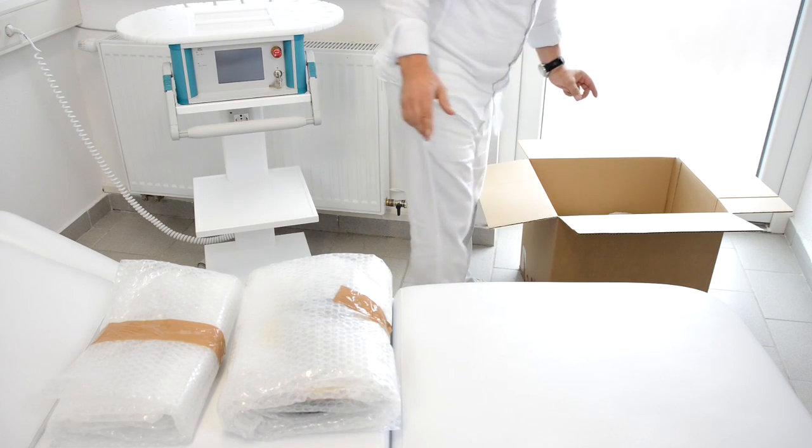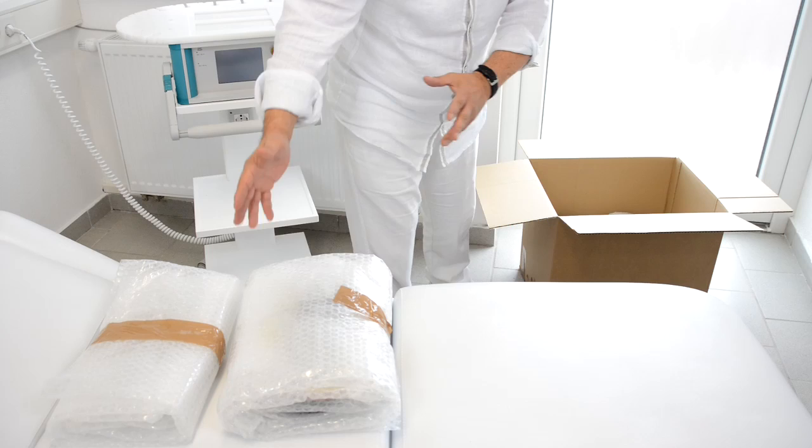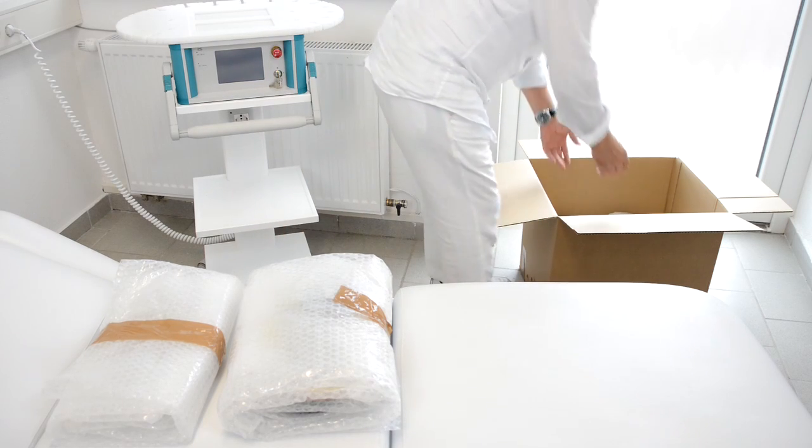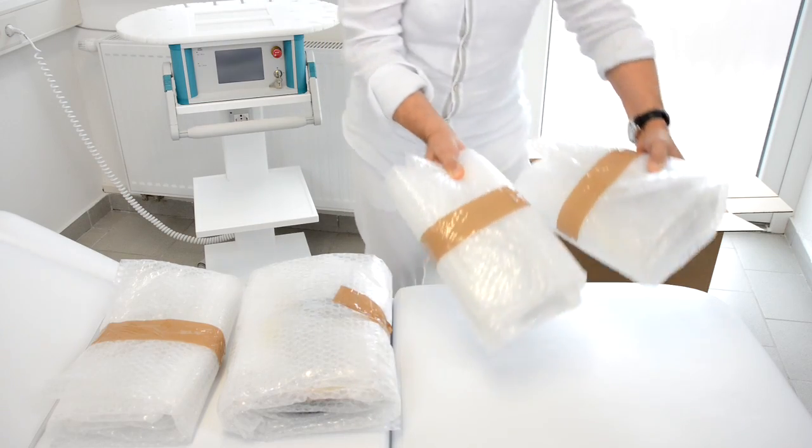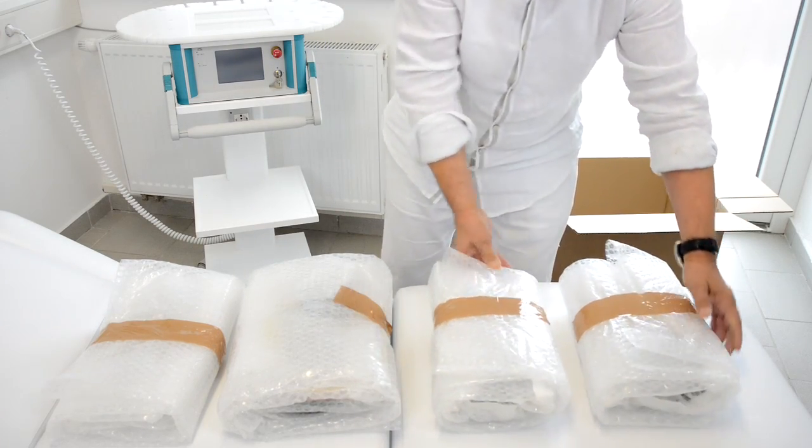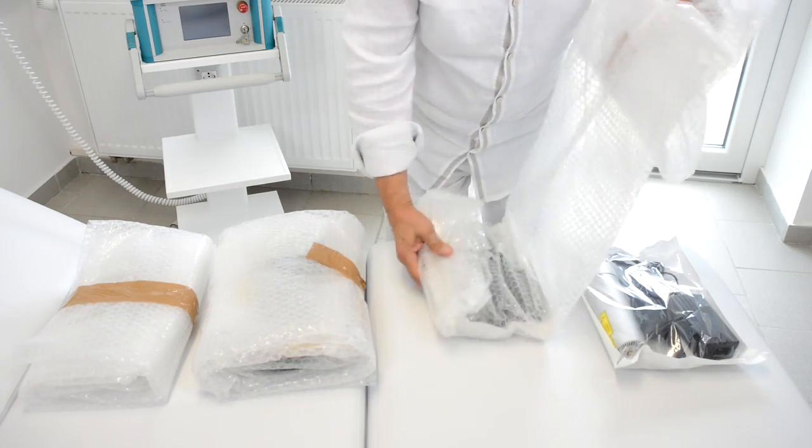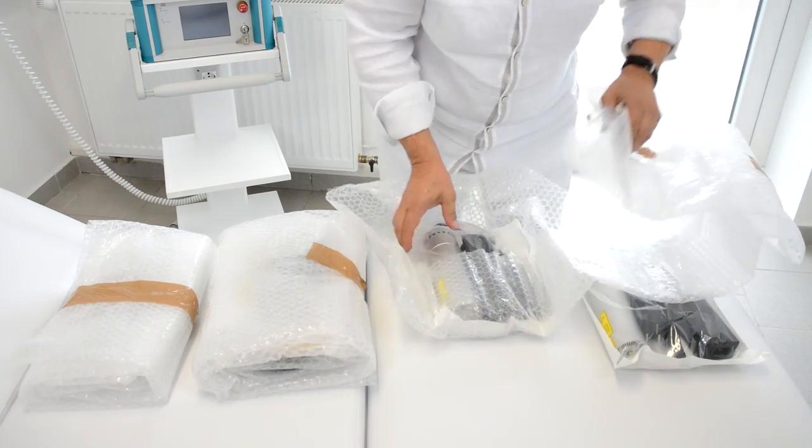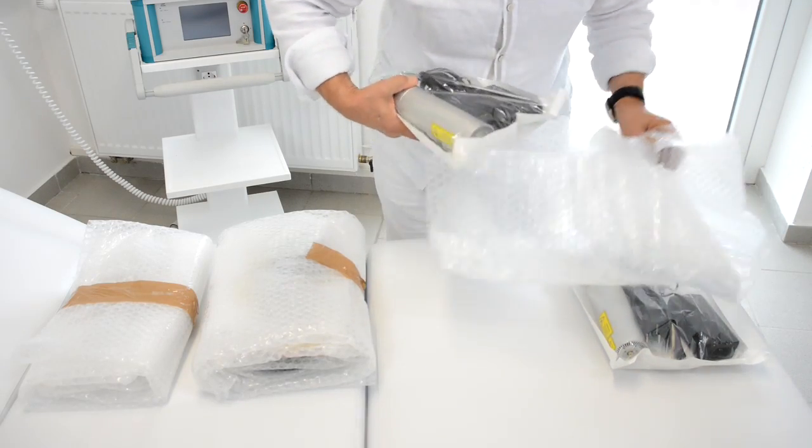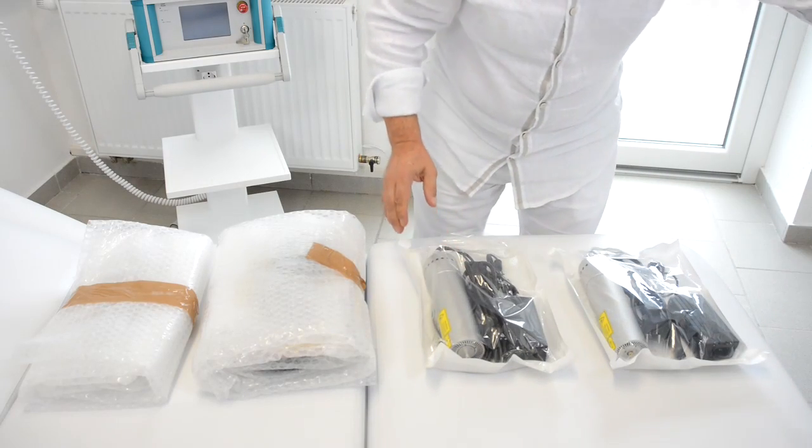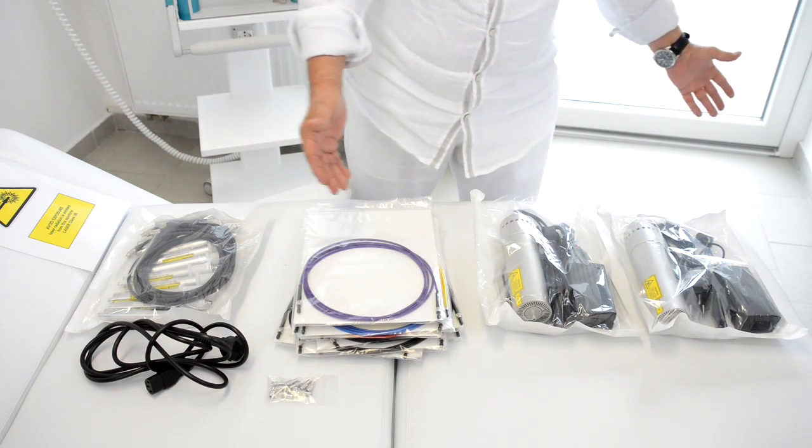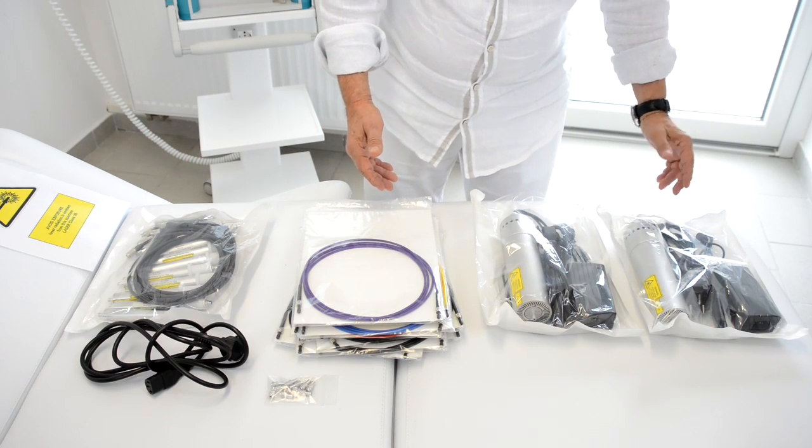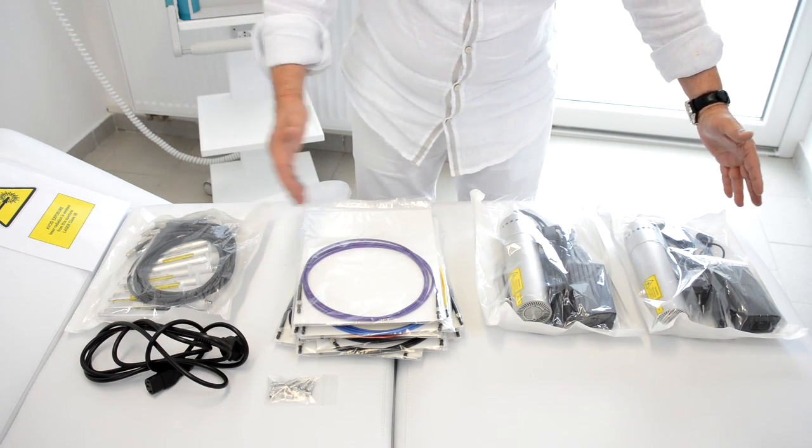In the next step we take out the laser models and the different cables and fibers from the package. Now I take out the different laser models from the protecting foil. I've packed everything from the box and you see we have all this equipment here.